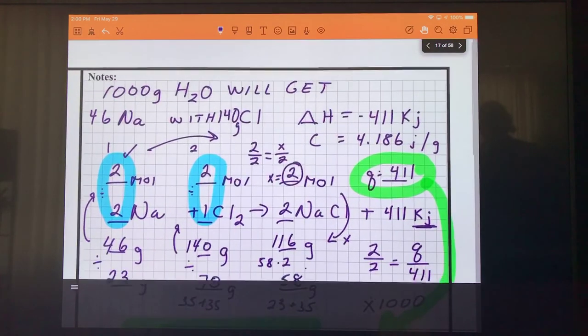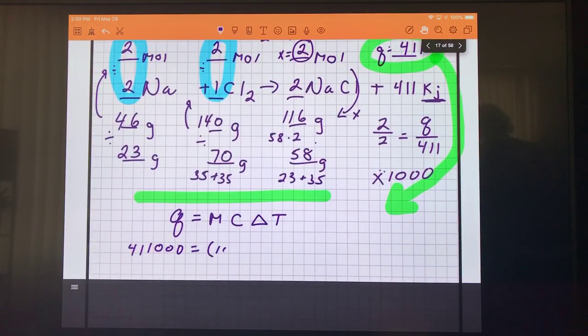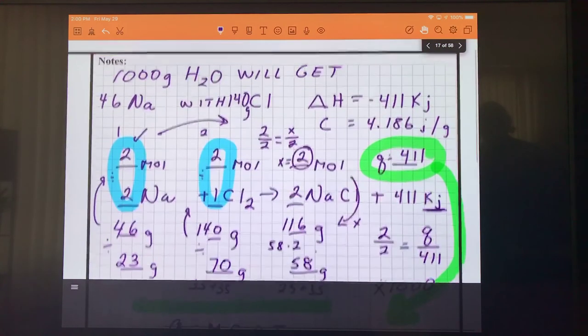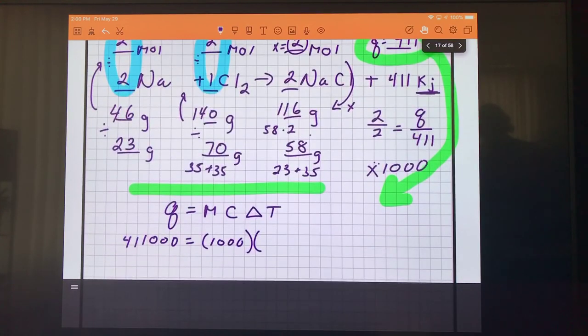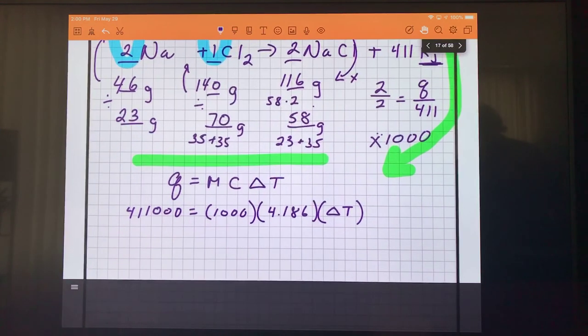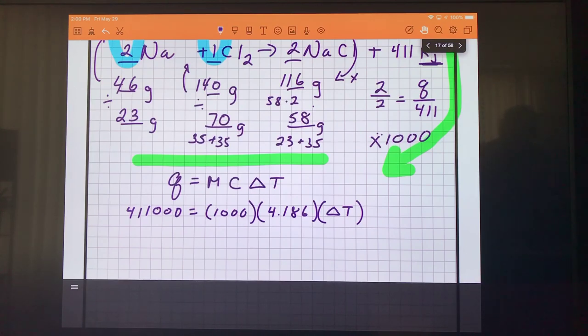The mass, we said up above, we were going to start with 1000 grams of water. C, specific heat of water, we said is 4.186. And the change in temperature, how much the water is going to warm up. So we just do some multiplication and division in here. And what you're going to find is that the temperature of the water changes by 98 degrees. So what we figured out in your whole big thermochemistry problem, if we took 46 grams of sodium, reacted it with 140 grams of chlorine, and gave all that heat to one liter of water, that liter of water would either boil or come very, very close to boiling because it would warm up by 98 degrees Celsius.